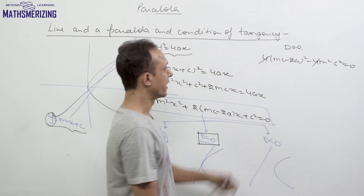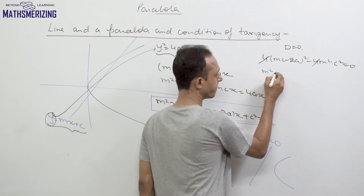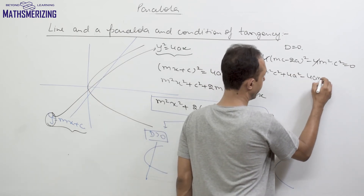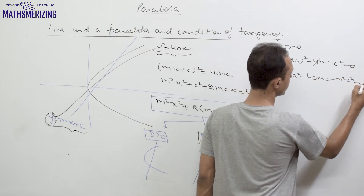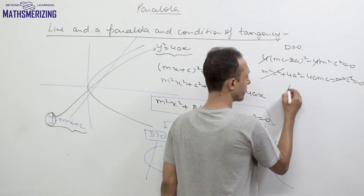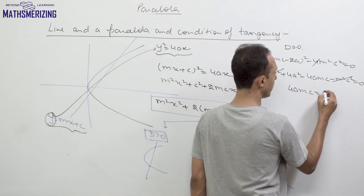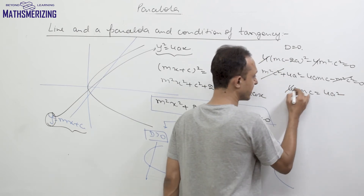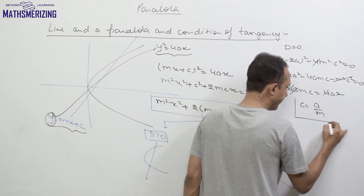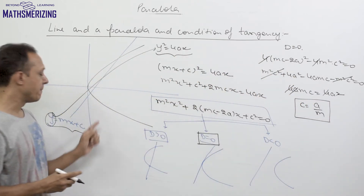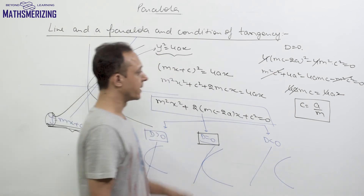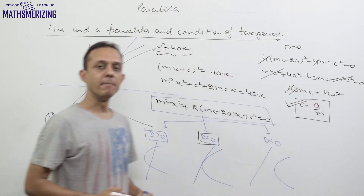Expanding and simplifying: m²c² + 4a² − 4amc − m²c² = 0. The m²c² terms cancel, giving 4a² − 4amc = 0, which simplifies to c = a/m. So the condition of tangency is c = a/m: the line y = mx + c touches the parabola y² = 4ax when c = a/m.